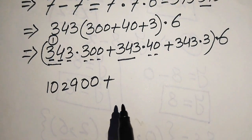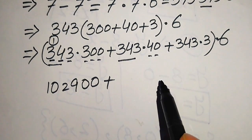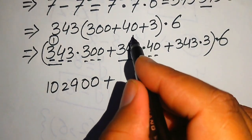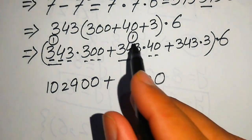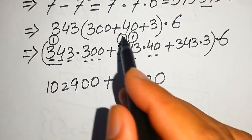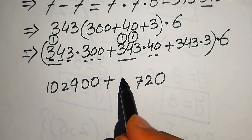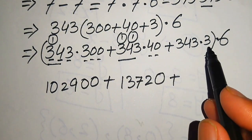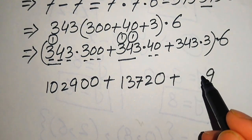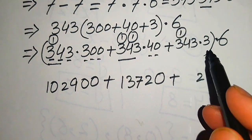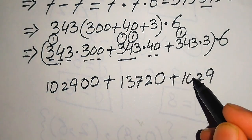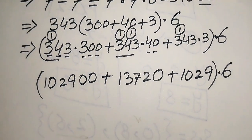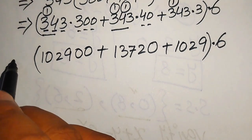Next we multiply 343 by 40: 0 times this number gives 0; 4 times 3 is 12, write 2 carry 1; 4 times 4 is 16, plus 1 is 17, write 7 carry 1; 4 times 3 is 12, plus 1 is 13. Then we multiply 343 by 3: 3 times 3 is 9; 3 times 4 is 12, write 2 carry 1; 3 times 3 is 9, plus 1 is 10.